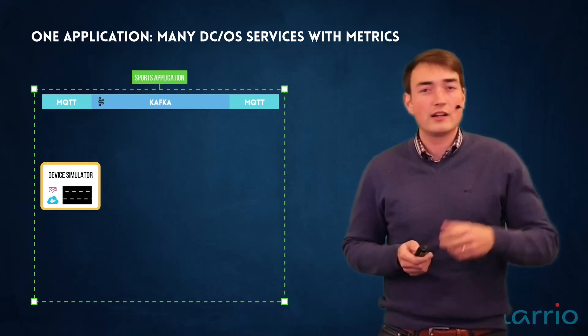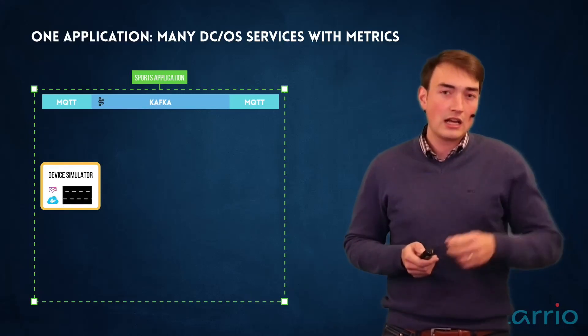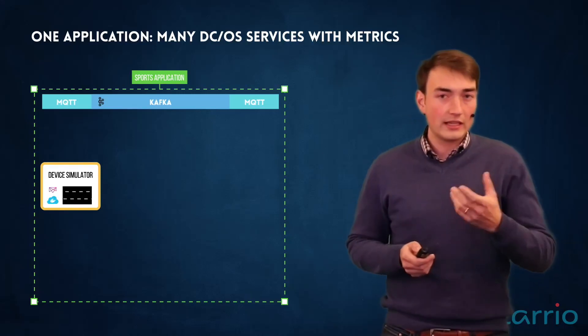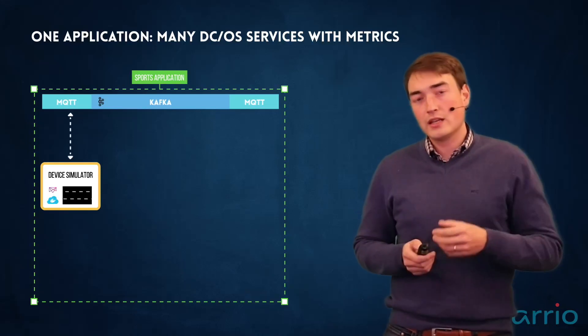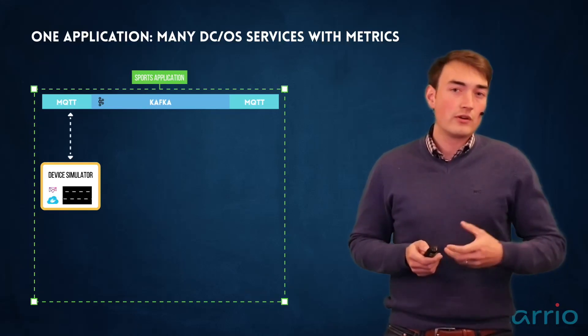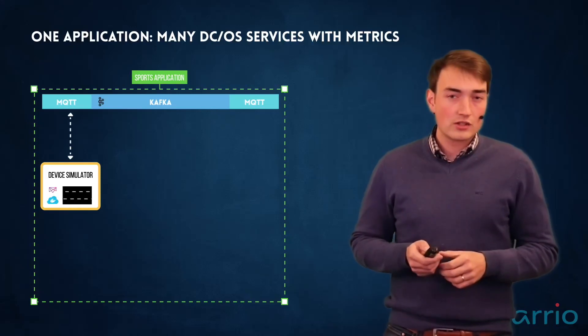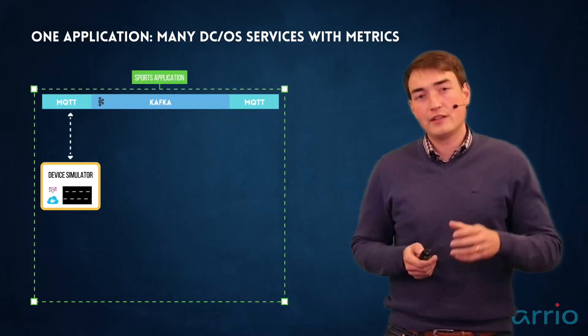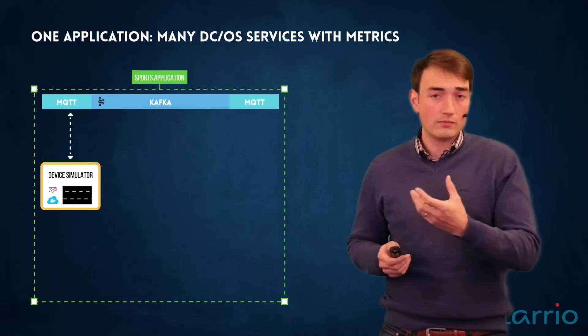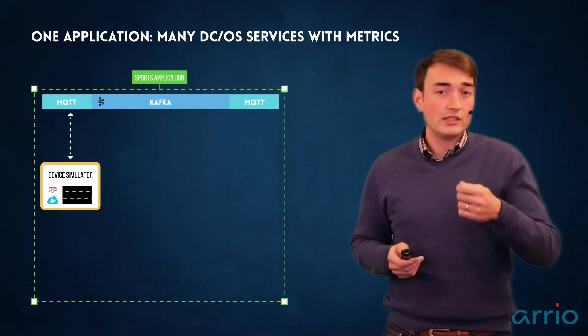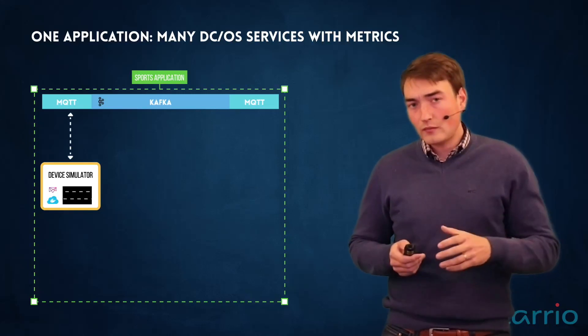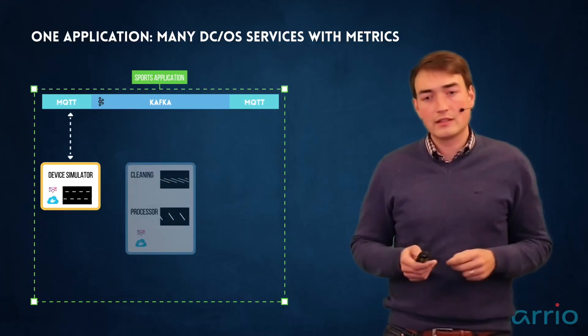The first component is a device simulator that simulates data flowing into our platform, and the data is flowing in through our MQTT connectors. So we do not only have a device simulator but also a core component on our platform to provide MQTT tokens and an MQTT broker of course as well. So we already have two components there.